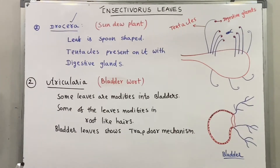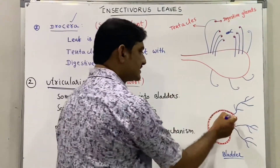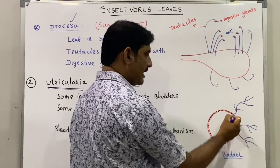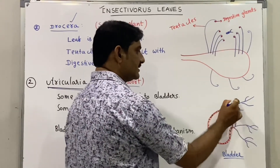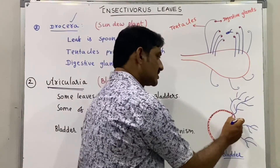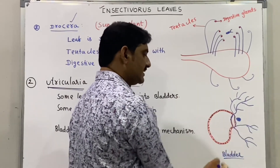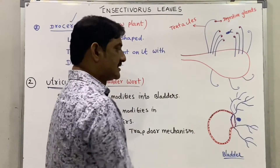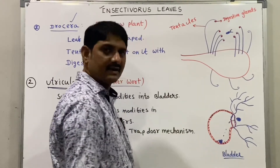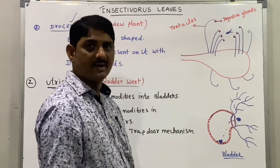Next is Utricularia, commonly known as bladderwort. Some of its leaves are modified into bladder-like structures consisting of a trapdoor. Other leaves are modified into long, root-like, hair-like structures. When an insect enters, the trapdoor closes and the bladder works like a trap. Digestive juices are produced and the insect is killed.